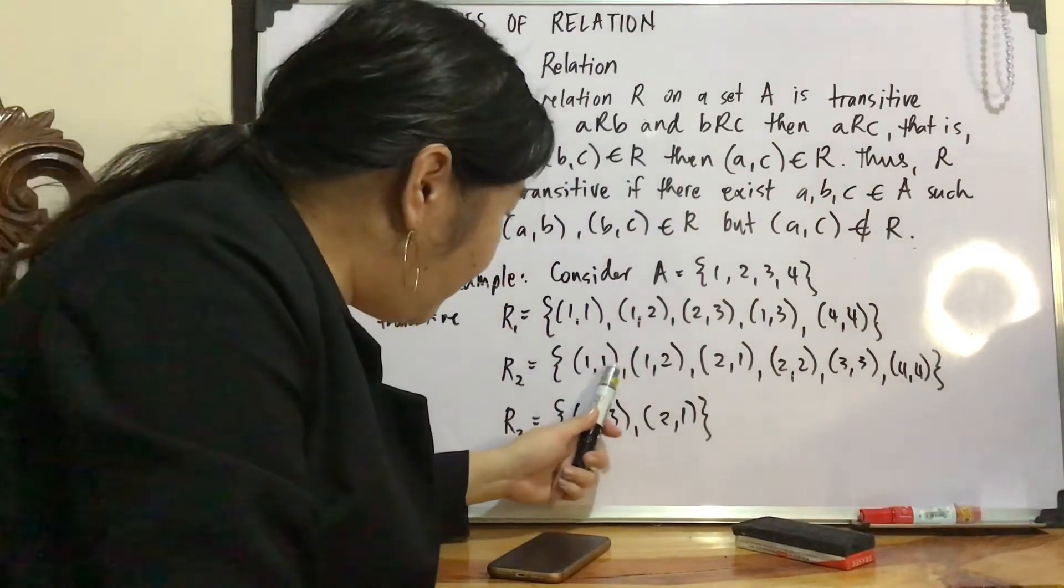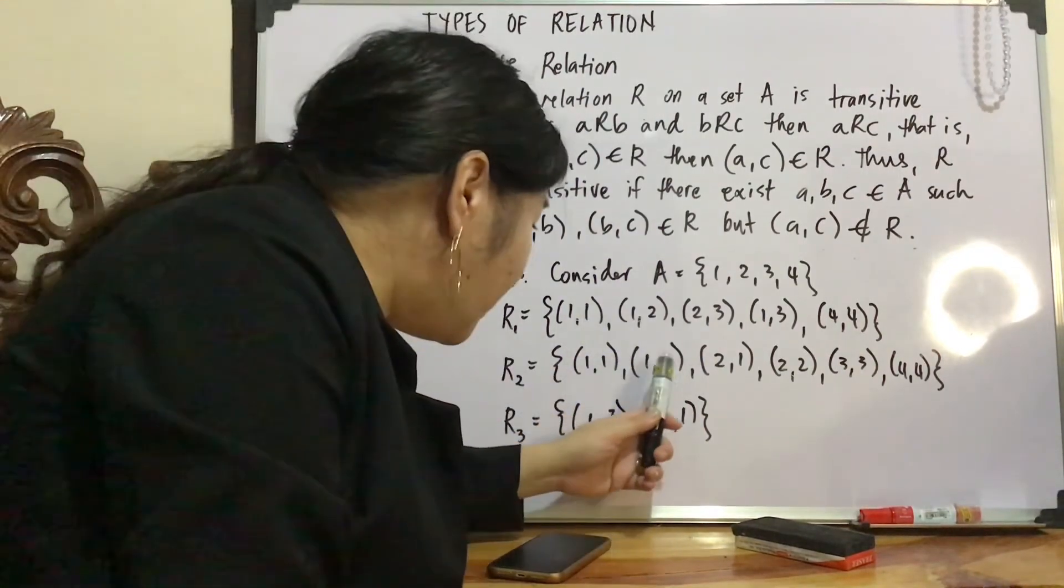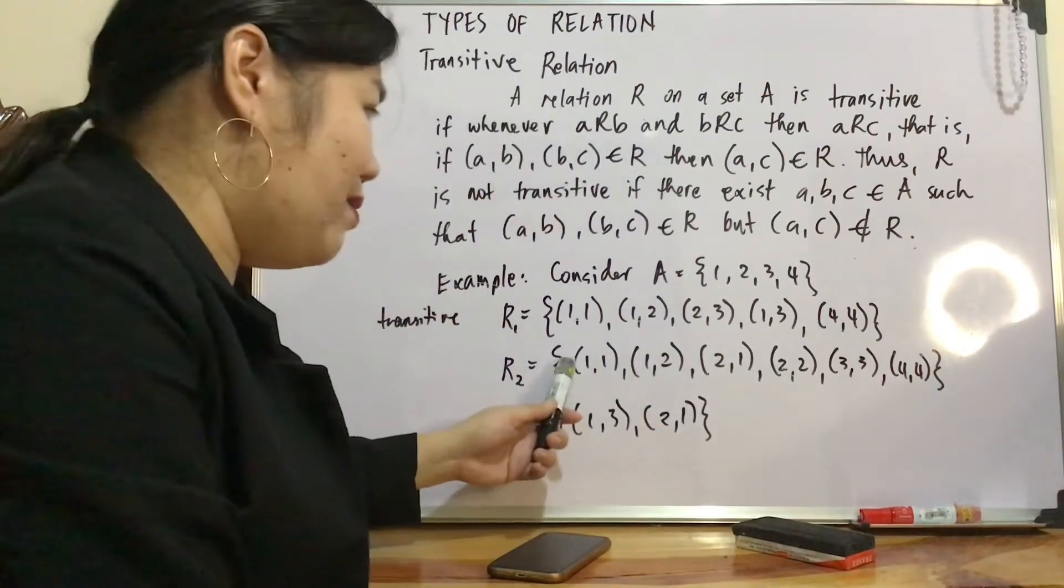let's look at R2, relation 2. So (1,1), (1,2), (1,2). (1,2) is here. Alright, (1,2), (2,1), (1,1) is here.